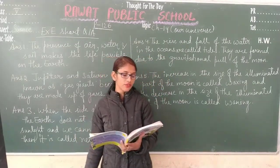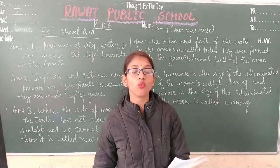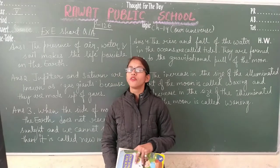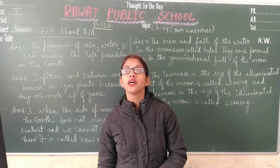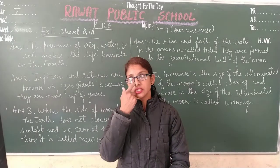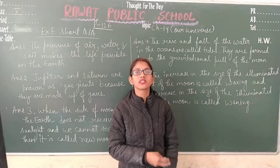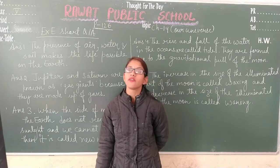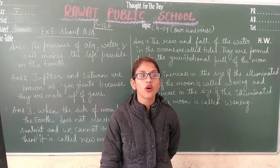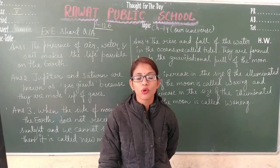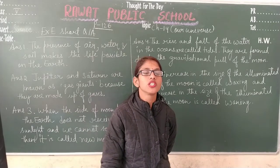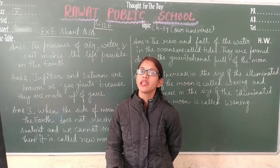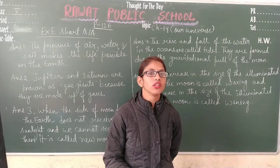Question number 1 is: why is life possible only on the earth? In this question, you have to write why life is possible only on the earth. As we have discussed, earth is a unique planet and there is availability of air, water, soil, and an appropriate amount of sunlight is also received by this planet from the sun. This makes life possible on the earth.